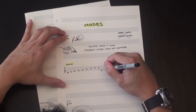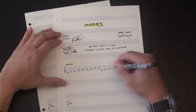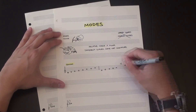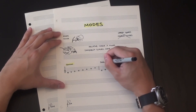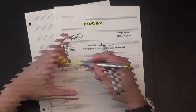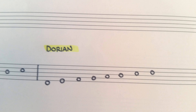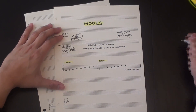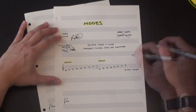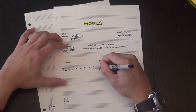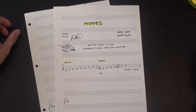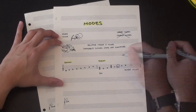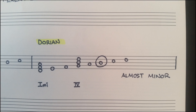But if we play the same notes with D as the tonic, we get what's known as D Dorian. This is a much more interesting scale, commonly used in folk music in songs like Scarborough Fair. Dorian sounds very similar to natural minor, but with a major 6th degree. It also contains one of my favorite chord movements: 1 minor to 4 major.